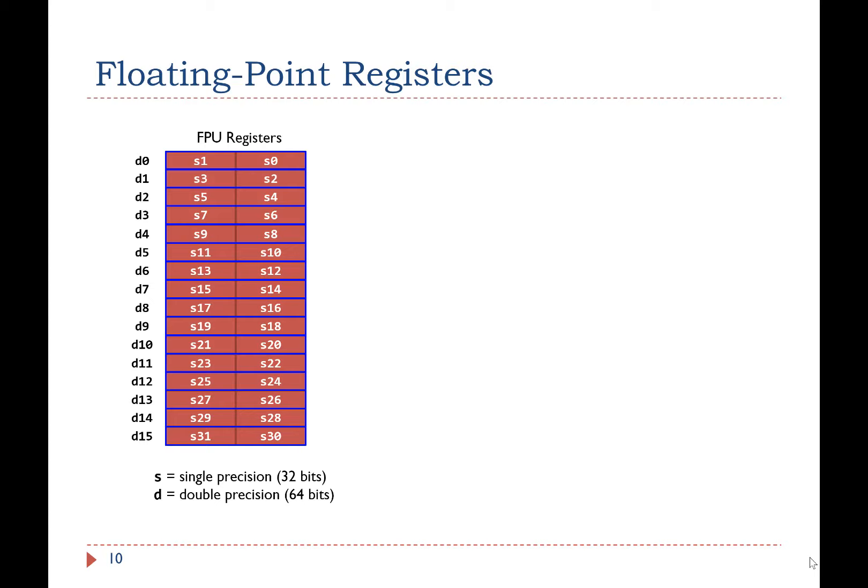For example, the double precision register D0 is composed of two single precision registers S1 and S0, with S1 holding the upper 32 bits and S0 the lower 32 bits.